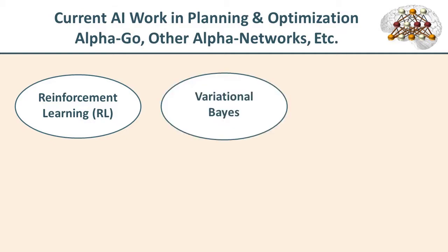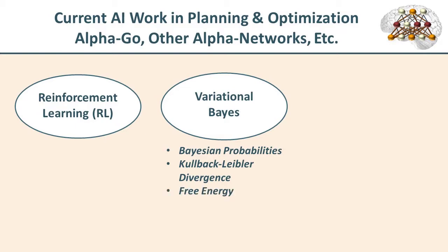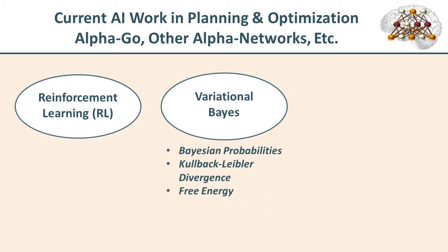We can't talk about reinforcement learning without also discussing a related and complementary method: variational Bayes. Variational Bayes is obviously based on Bayesian probability work and involves the Kullback-Leibler divergence — a difference measure between the model you have of a system and the actual system data. That whole variational Bayes notion rests firmly on free energy, that same free energy foundational to statistical physics. So once again, we're back to the need for statistical physics as a background.